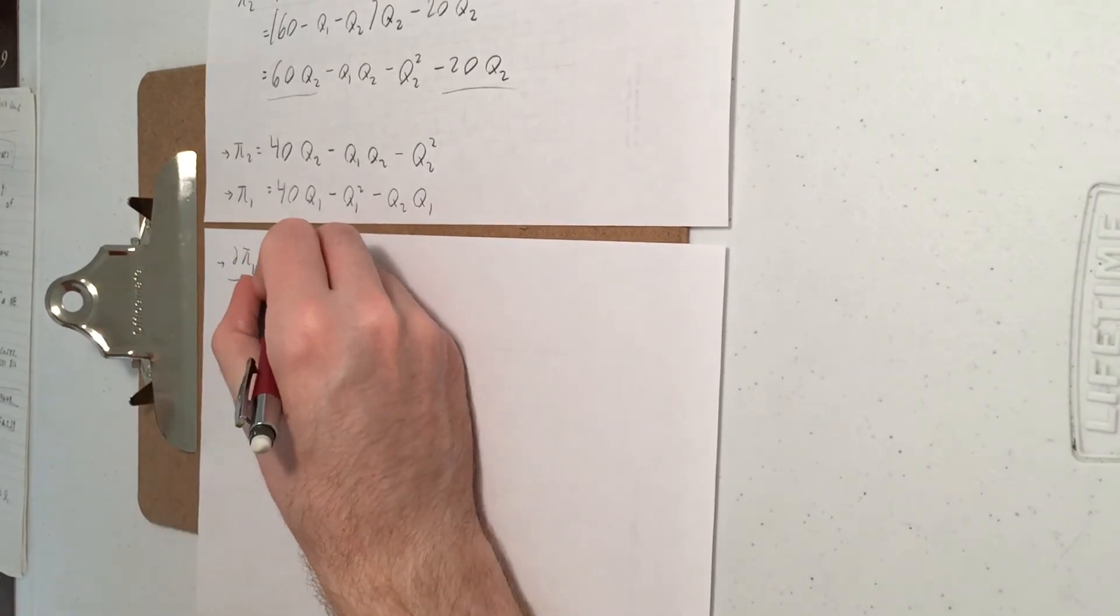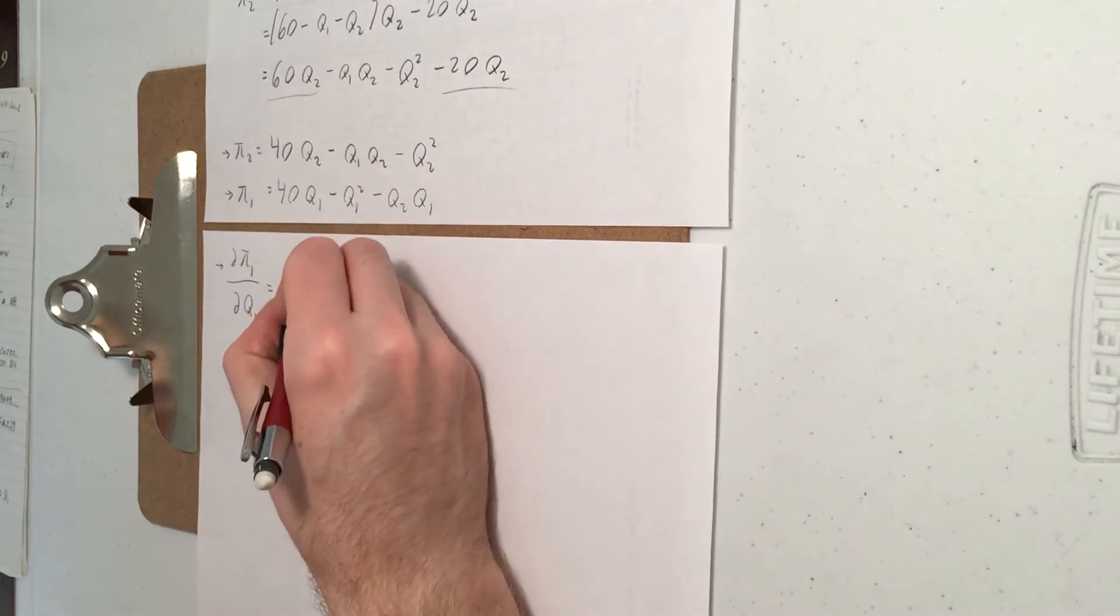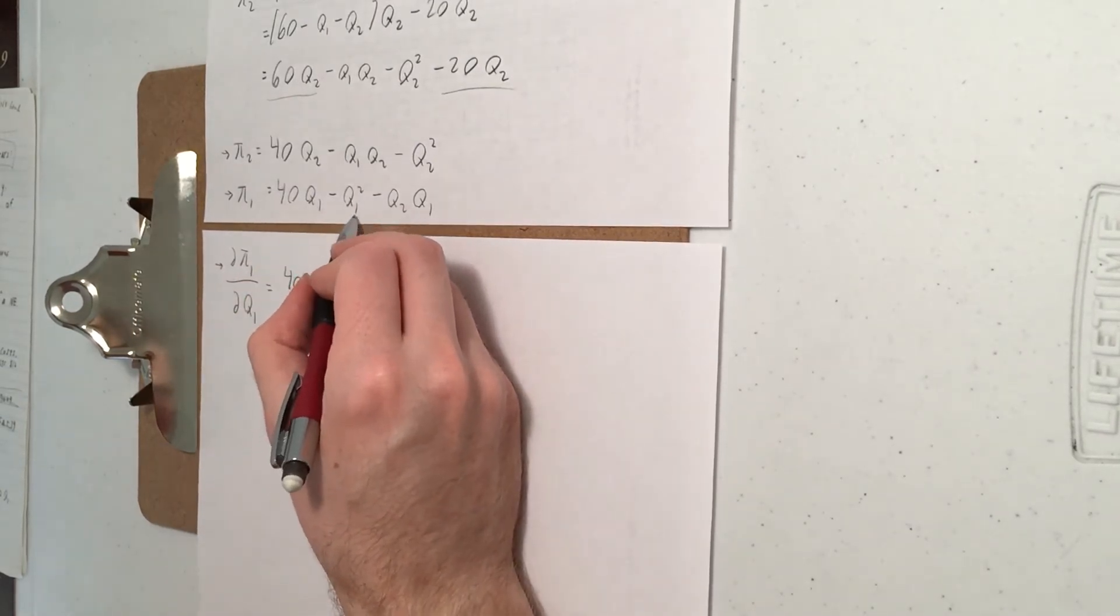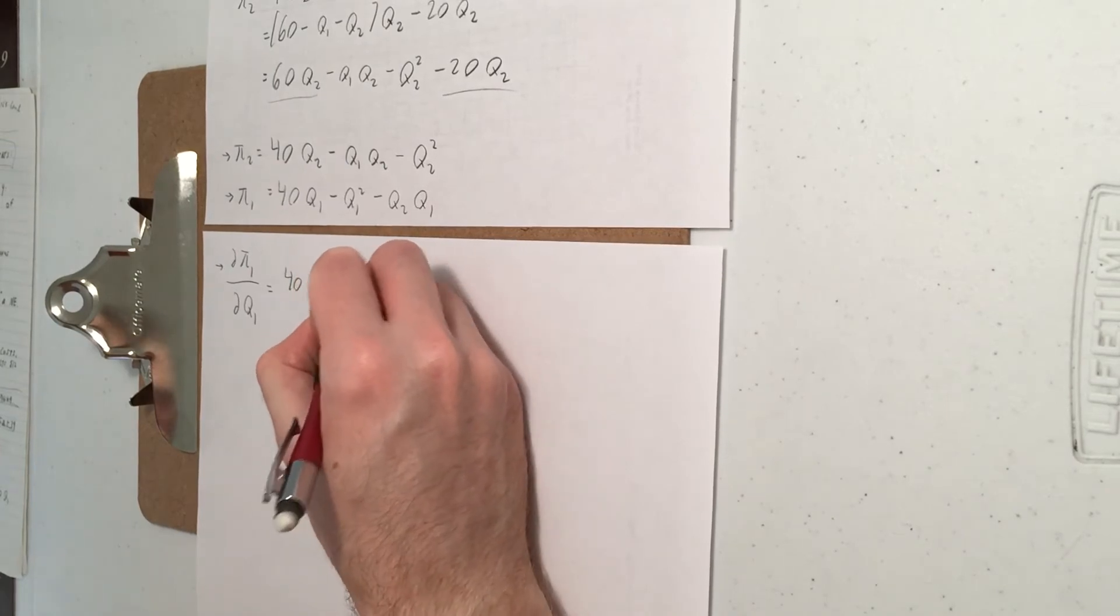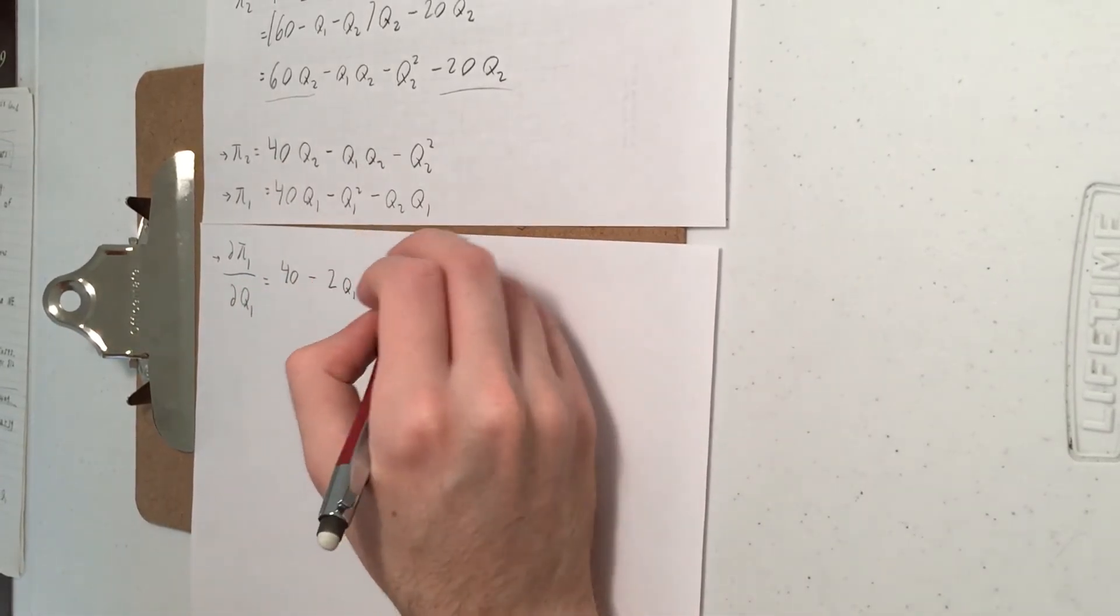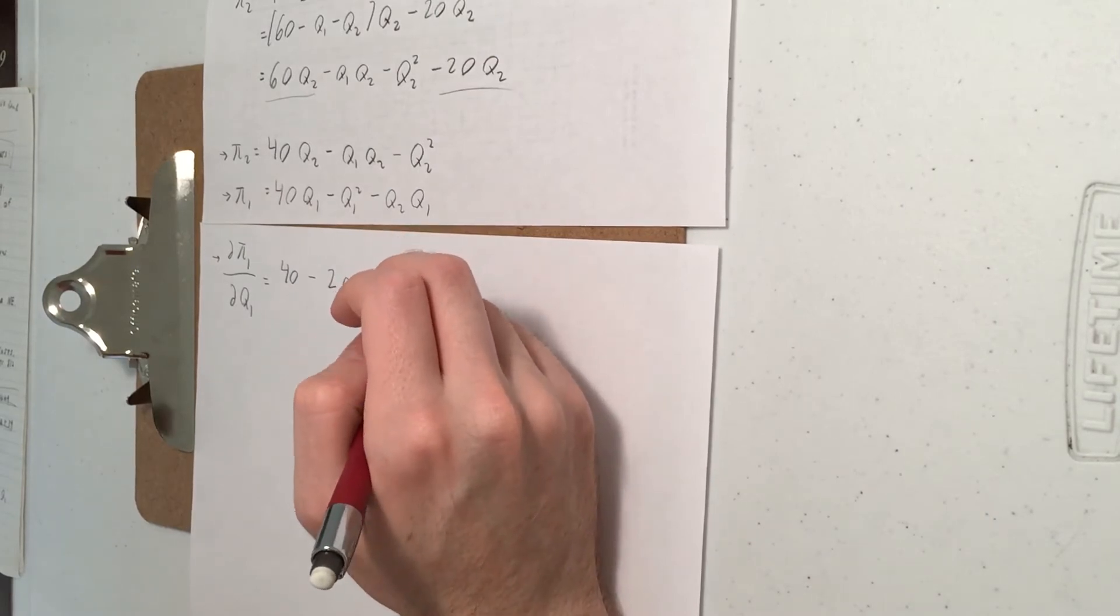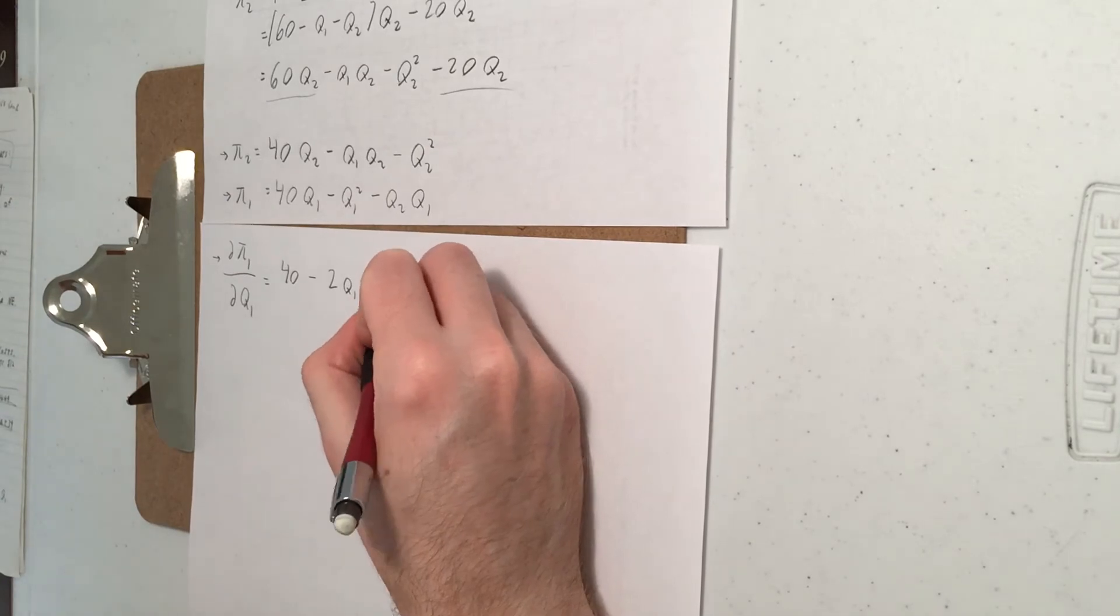We get 40 for this first term. The derivative of Q1 squared is going to be 2Q1. The derivative of Q2 times Q1 with respect to Q1 is going to be Q2.